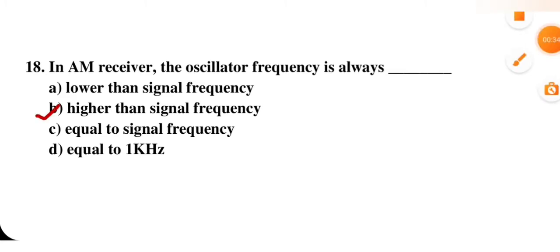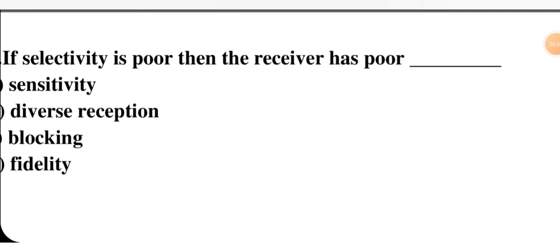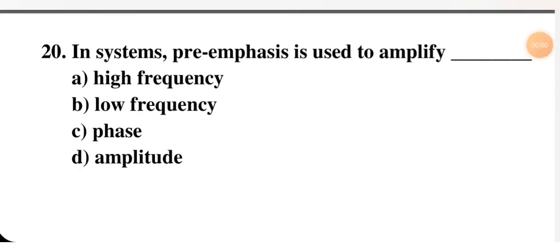If selectivity is poor, then the receiver has — poor sensitivity, diverse reception, poor blocking, or poor fidelity. Selectivity means proper selection; if selectivity is poor, blocking will also be poor. So C is the correct answer — poor blocking capability. Pre-emphasis is used to amplify — high frequency, low frequency, phase, or amplitude signals.